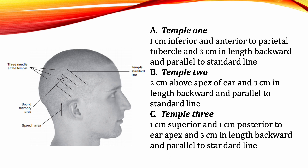Temple 1: This line is 1 cm inferior and anterior to the parietal tubercle and 3 cm in length backward, parallel to the standard line. Temple 2: This line is 2 cm above the apex of the ear and 3 cm in length backward and parallel to the standard line. Temple 3: This line is 1 cm superior and 1 cm posterior to the ear apex and 3 cm in length backward and parallel to the standard line.